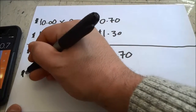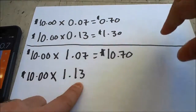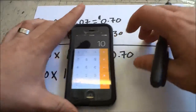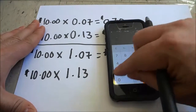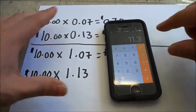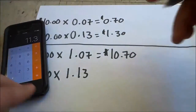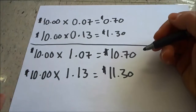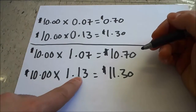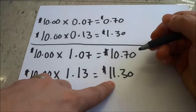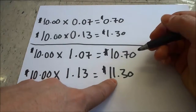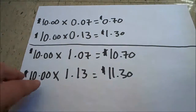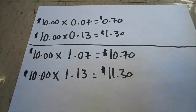If the price of the product is ten dollars and there's a thirteen percent sales tax, I would end up paying eleven dollars and thirty cents for the final price of the product — basically the product with the sales tax included.